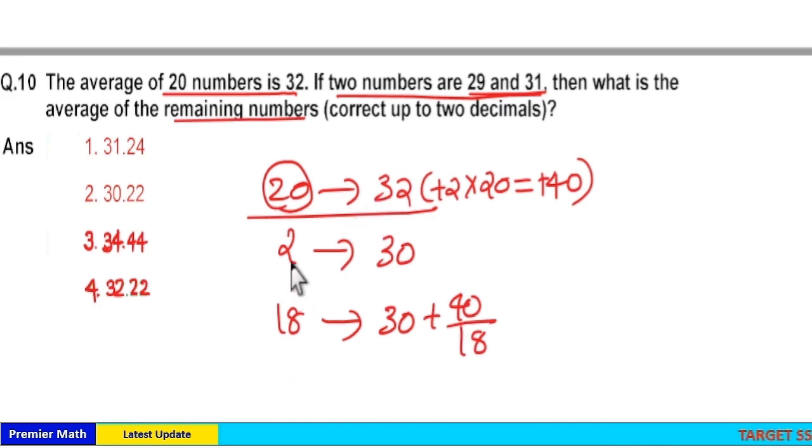Because here you can see this 2 numbers average is 30. Then 18 numbers average should be greater than 30 in order to balance 20 number average as 32. Which means this extra sum 40 should be equally distributed to the remaining 18 numbers in order to balance total average as 32.